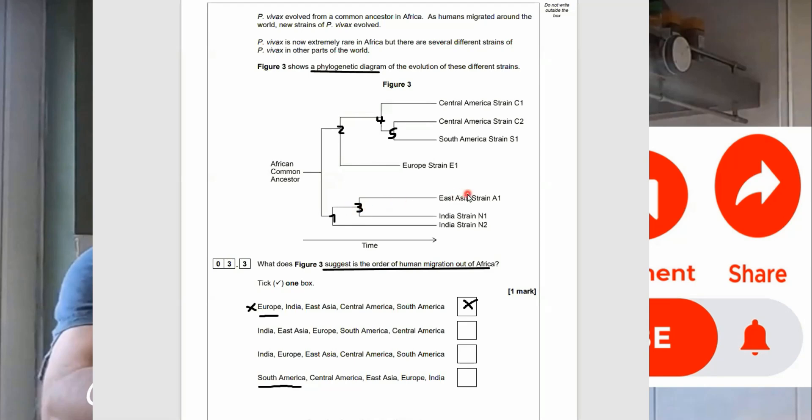So, these phylogenetic trees or diagrams can show you how closely related things are. So, follow the numbers I've written, and it will go India, Europe, East Asia, Central America, and South America. And there we go. That's your mark. Let's move on to 3.4.